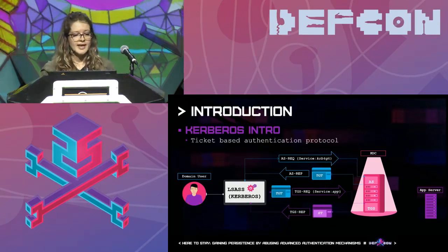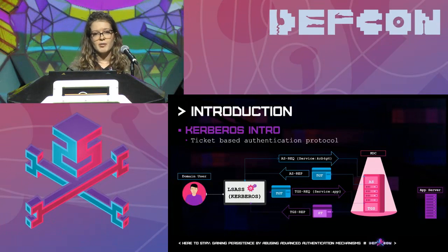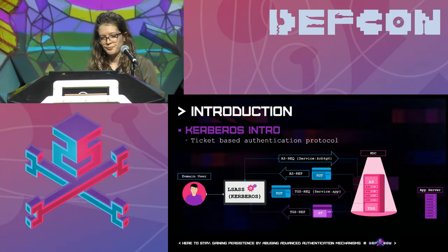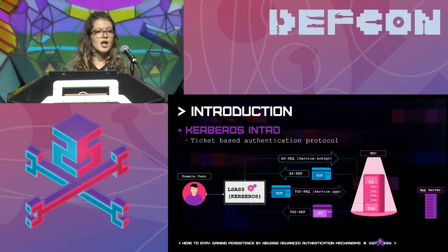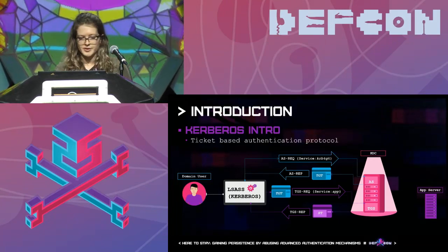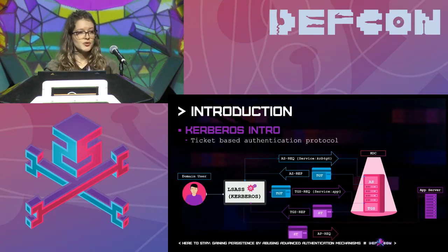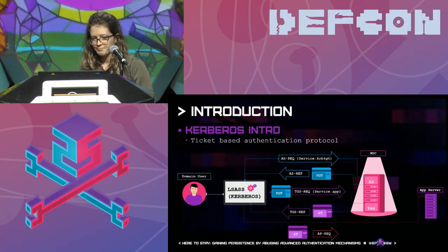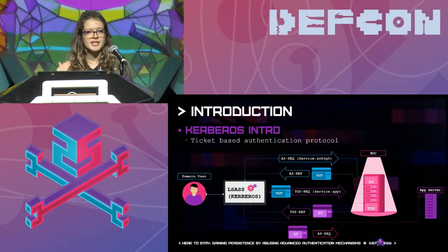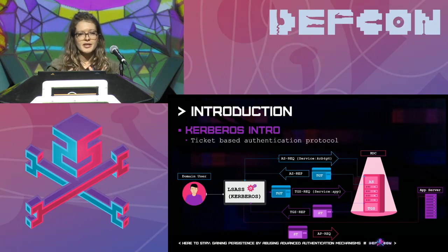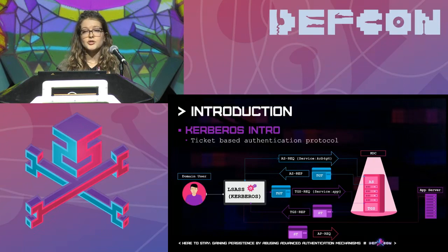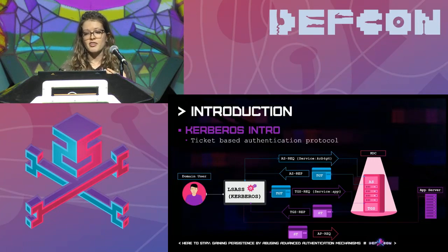The second stage is the client sending a TGS request to the ticket-granting service, requesting a ticket for the specific service it wants access to. It attaches the ticket-granting ticket along with additional authentication data, and if authentication is successful, it gets back a service ticket for that specific service. The third stage is using that ticket to access the application service. The key difference: while a service ticket can only access one specific service, the ticket-granting ticket can be used in multiple TGS requests to access more domain resources — making it a more powerful master ticket.